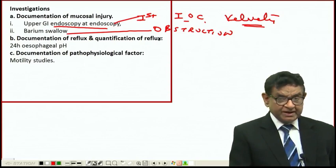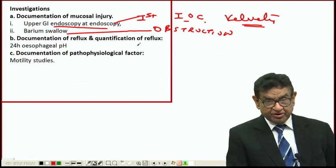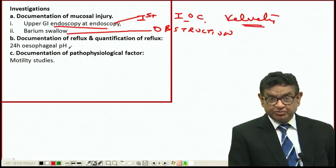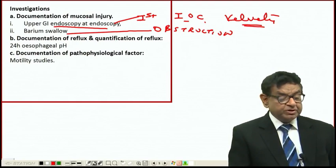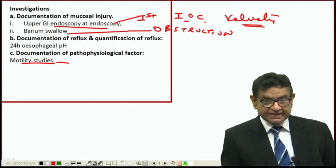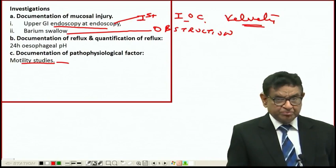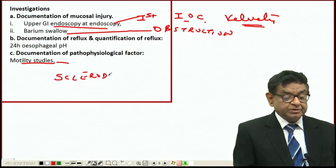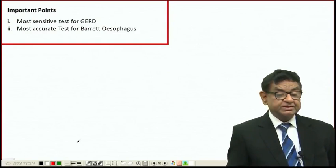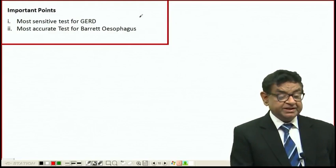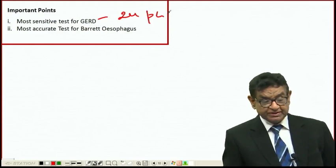When we do endoscopy and find obstruction, we can take a biopsy. For documentation and quantification of reflux, 24-hour esophageal pH monitoring of the lower end of the esophagus is the most sensitive test to demonstrate GERD. Regarding pathophysiological factors, esophageal motility study is done only in selected cases where we think GERD is due to dysmotility, like in scleroderma. This is not a routine test. Remember, the most sensitive test for GERD is 24-hour pH monitoring, and the most accurate test for Barrett's esophagus is biopsy.